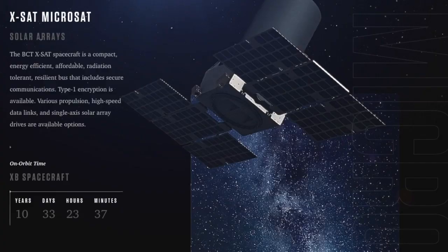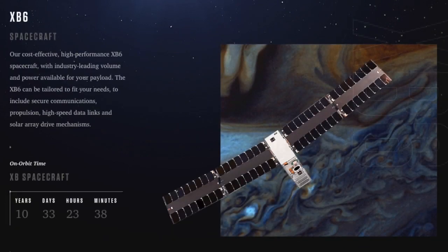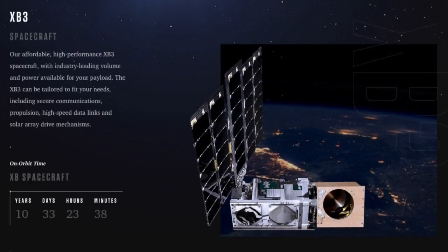We have 13 satellites on orbit, we have enabled over 60 different missions, and we have over 80 different projects that we're working on, different satellites.